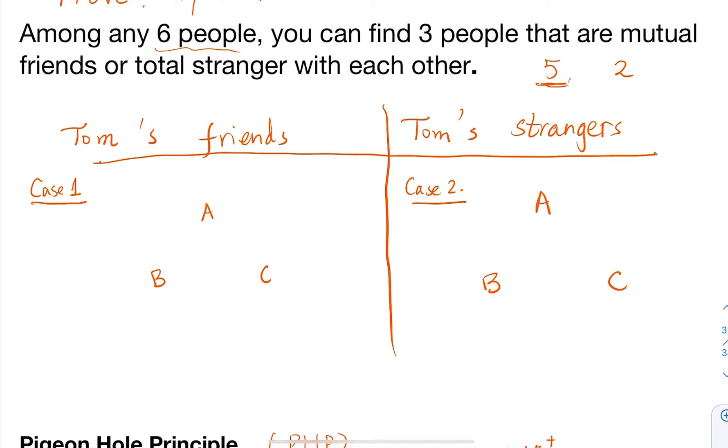Now the remaining five people - you're going to put five people into two containers. The Pigeonhole Principle says if you put five objects into two containers, then at least one container would contain three or more people. So you have three people that are all friends with Tom, or three people that are all strangers with Tom - A doesn't know Tom, B doesn't know Tom, C doesn't know Tom.